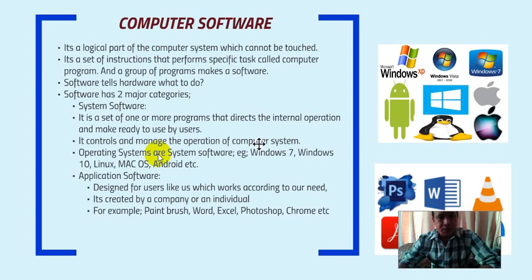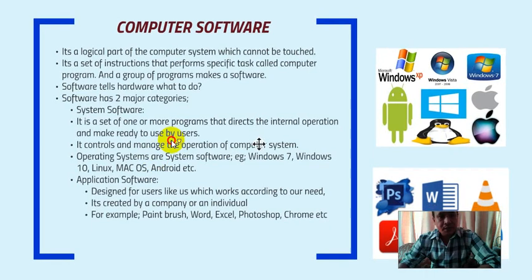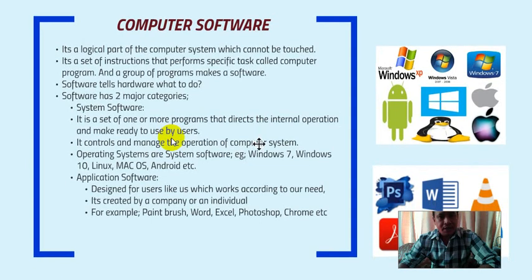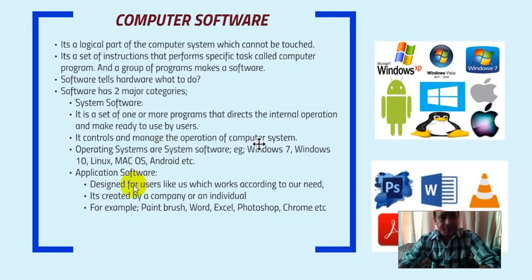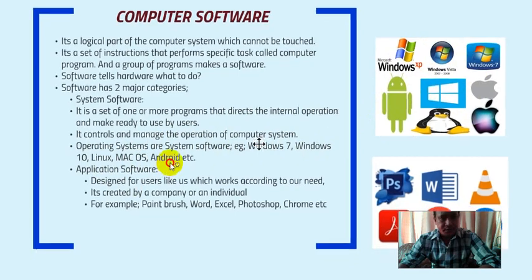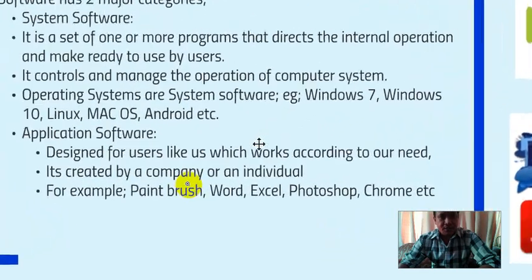System software controls and manages the operation of the entire computer system — whether the mouse is working properly, whether the hard disk is working properly. If RAM or the hard disk is damaged, the system software gives a message saying this part is not working. That is why system software is very important. Operating systems such as Windows 7, Windows 10, Linux, Mac OS, and Android are all examples of system software.